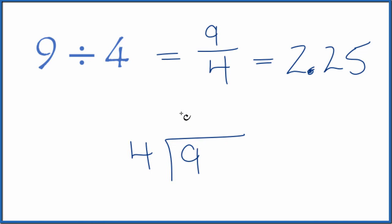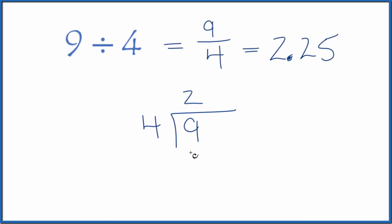4 goes into 9 two times. 2 times 4 is 8. We subtract and get 1 left over. 4 doesn't go into 1. We call this 10 if we put a decimal point up here.